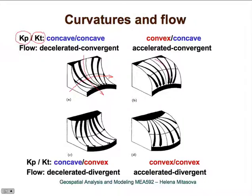A convex-concave shape—convex in the direction of gradient but concave in the direction tangent to the contour—produces accelerated and convergent flow. This represents an area of very high erosion potential; you would see these forms where gullies are initiated, with a sharp increase in flow velocity and also flow depth due to convergent water flow.